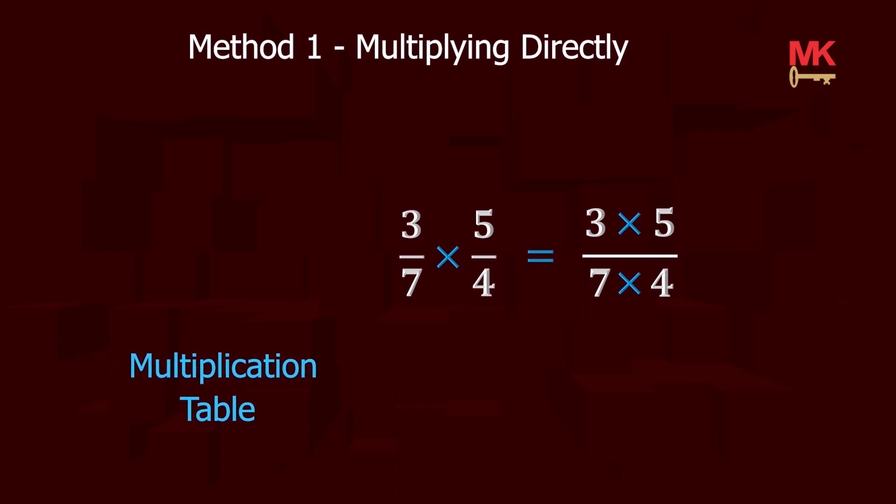From our multiplication table, 3 times 5 is 15. For the denominators, 7 times 4 is 28. Therefore, the fractions 3 over 7 times 5 over 4 has the same value as 15 over 28. Is this all? Of course, yes. Easy and tasty.